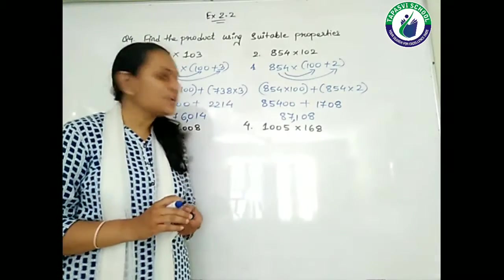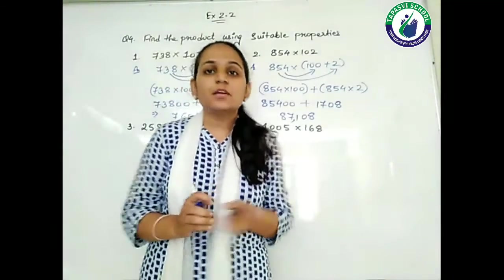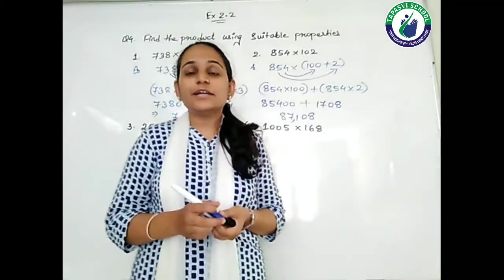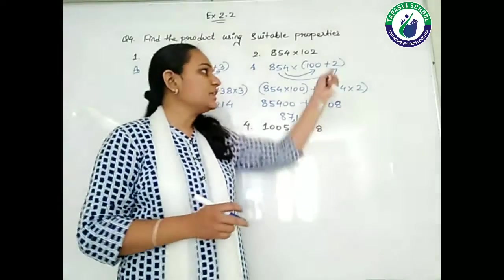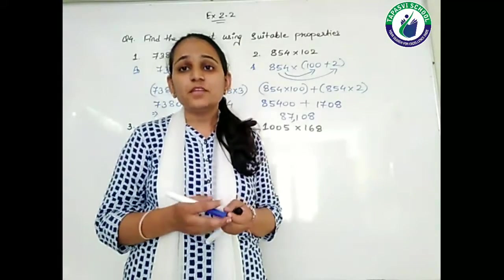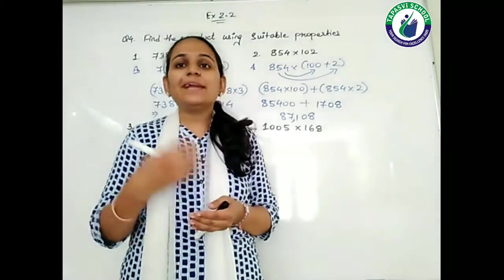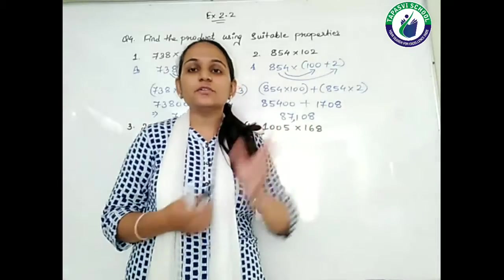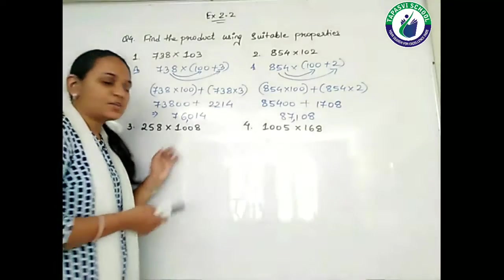It is not necessary that here you can only get an addition operation — you can also get a subtraction operation, depending on the numbers. Here the number is 102, so we write it as 100 plus 2. But if the number were 98, you cannot do 100 plus 2 — in that case you have to write it as 100 minus 2.